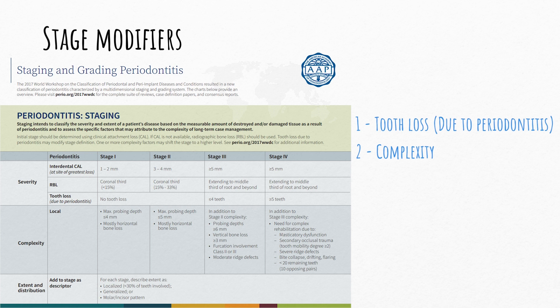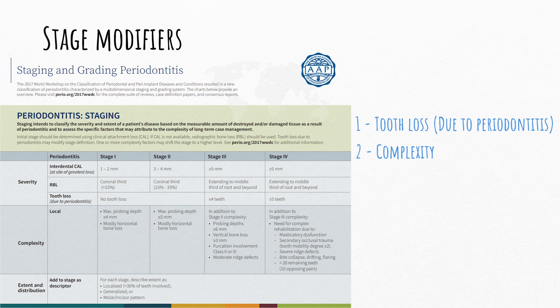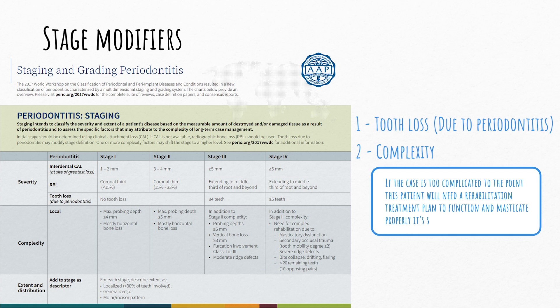Let's break it down. If the probing depth was 4 mm or less, it's stage 1. If it was 5, it's stage 2, with only horizontal bone loss most of the time. Once the pocket depth reaches 6 mm or more, it's either stage 3 or 4. If the case is too complicated to the point the patient will need a rehabilitation to implant function and masticate properly, it's stage 4. The distinction lies mainly within the complexity factors.